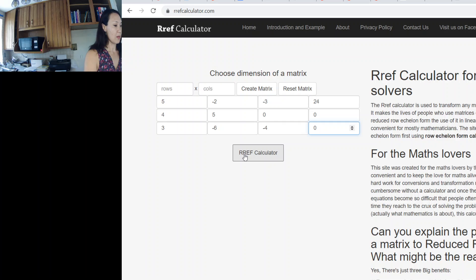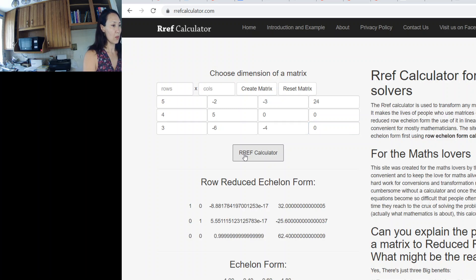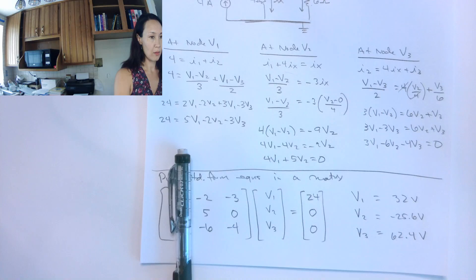I just hit the button to calculate, and this is going to give me my answer is this third column here. So I get for V1, V2, V3, my answers are 32 volts, V2 is negative 25.6 volts, and V3 is 62.4 volts. So if I go back to my problem,